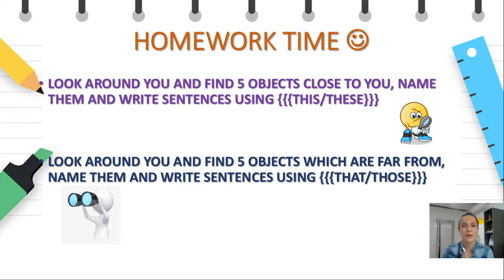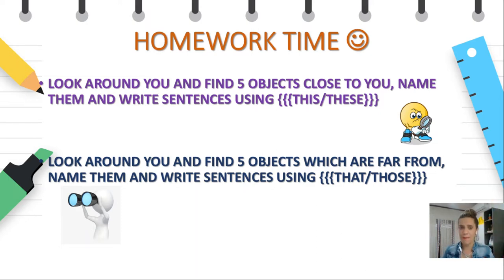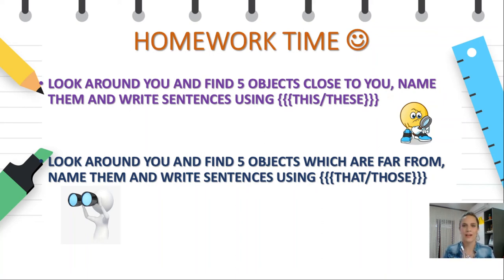It's homework time! Look around you — this is your first task. Find five objects close to you, name them, and write sentences using 'this' or 'these.' For example: This is my jacket. These are my headphones. Now look around again and find five objects which are far from you. Name them and write sentences using 'that' or 'those.' For example: Those are my windows. That is my cat. That is my mom. Those are my grandparents. Well done! I hope you had fun. Write your homework and have fun. Bye!